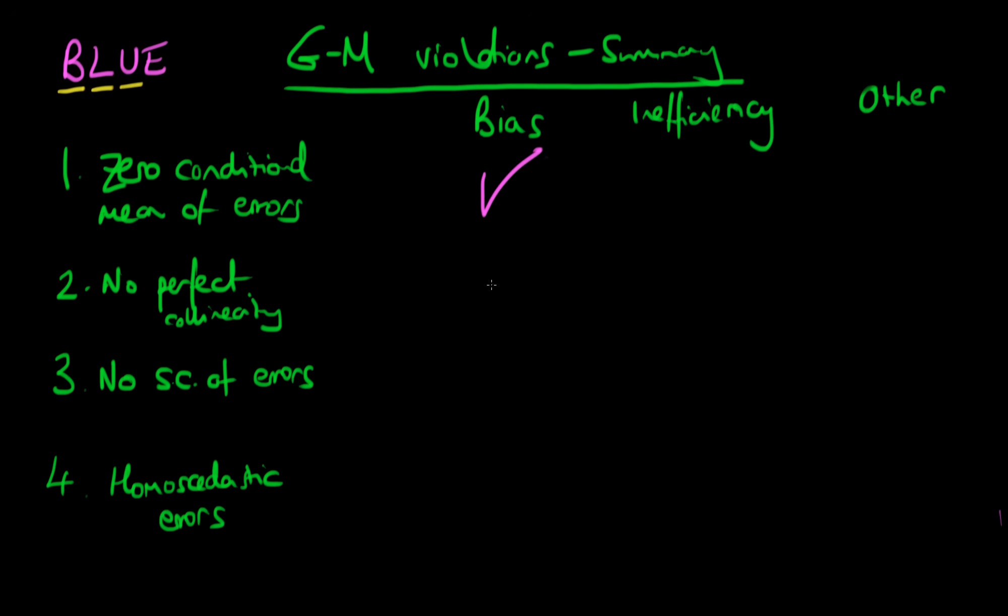And that's a really serious violation of the Gauss-Markov assumption because if we have bias in our model, then essentially we can't trust the outputs of our OLS estimators because of the fact that they're not going to be particularly indicative of what's going on in the population.